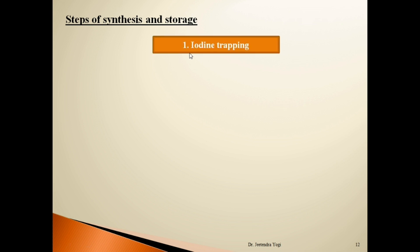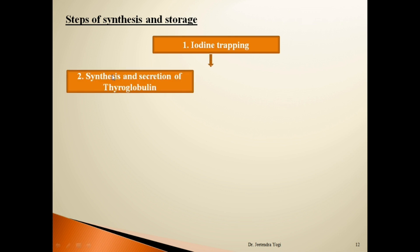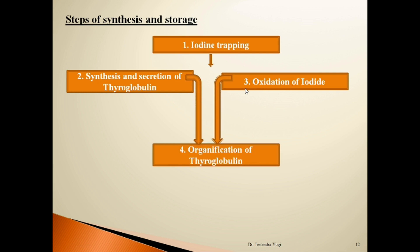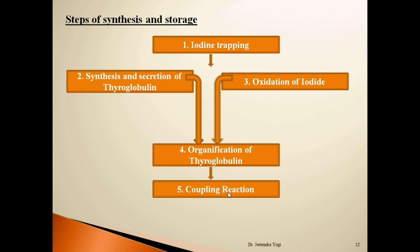The steps in synthesis of thyroid hormones are: first, iodine trapping — the entry of iodide ion into the thyroid follicle; second, synthesis and secretion of thyroglobulin, a large glycoprotein molecule; third, oxidation of iodide; fourth, organification of thyroglobulin — that is iodination of the thyroglobulin molecule; and fifth, the coupling reaction of this iodinated thyroglobulin molecule to form T3 and T4. The synthesized thyroid hormone is then stored in the thyroid lumen as a colloid substance. Let's see all these steps one by one in detail.